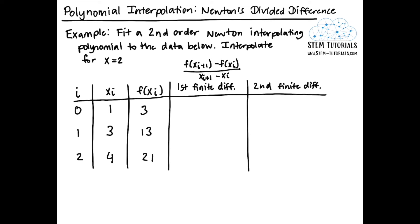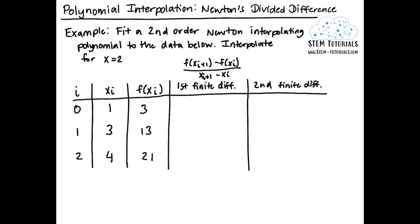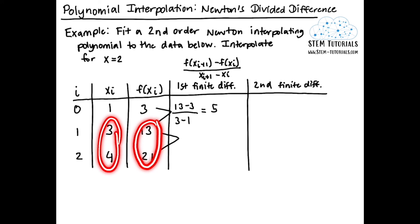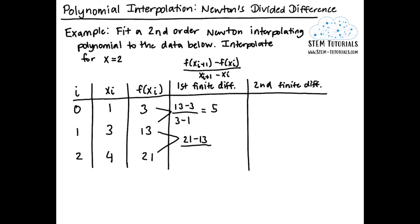For a second order Newton interpolating polynomial we need up to the second finite difference — two columns. For a third order polynomial you would need a third column. Let's calculate the first finite differences: we take the difference between f(x) values divided by the difference in x values. So (13 minus 3) divided by (3 minus 1) equals 10 over 2, which equals 5. Then (21 minus 13) divided by (4 minus 3) equals 8 over 1, which equals 8.